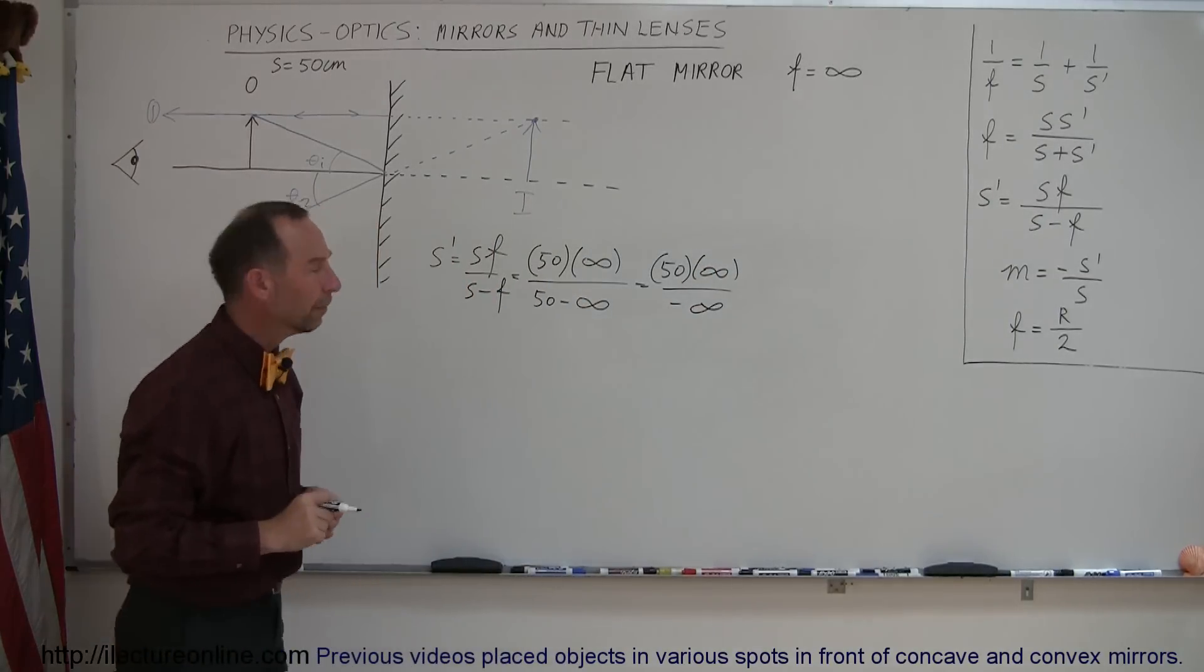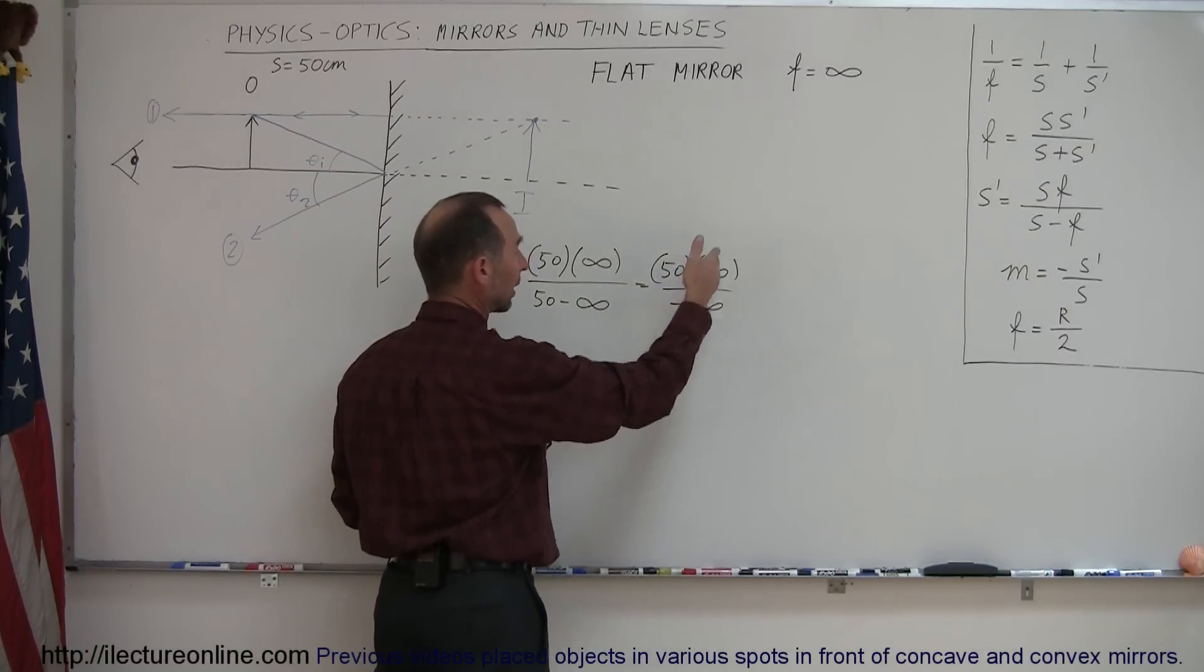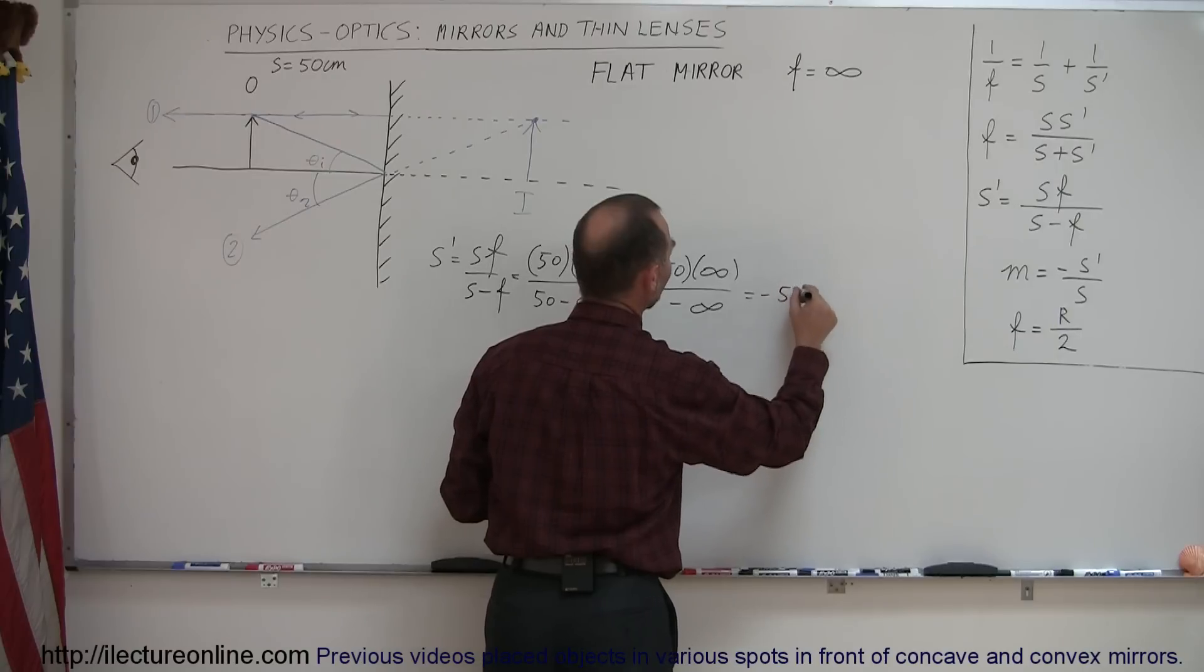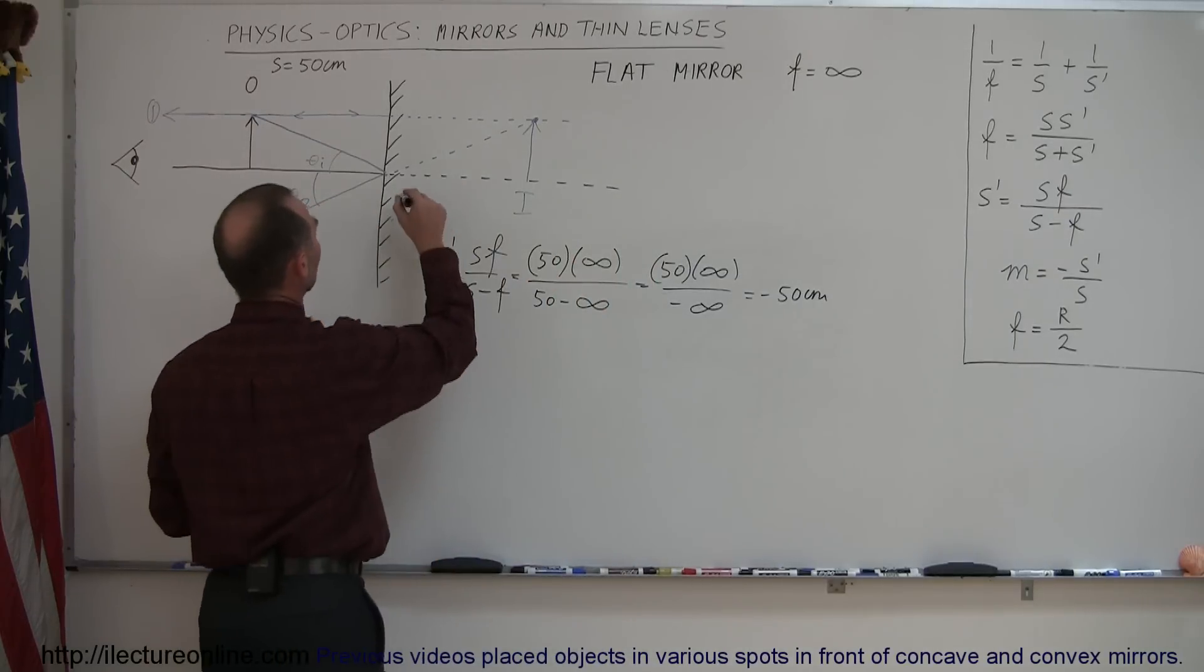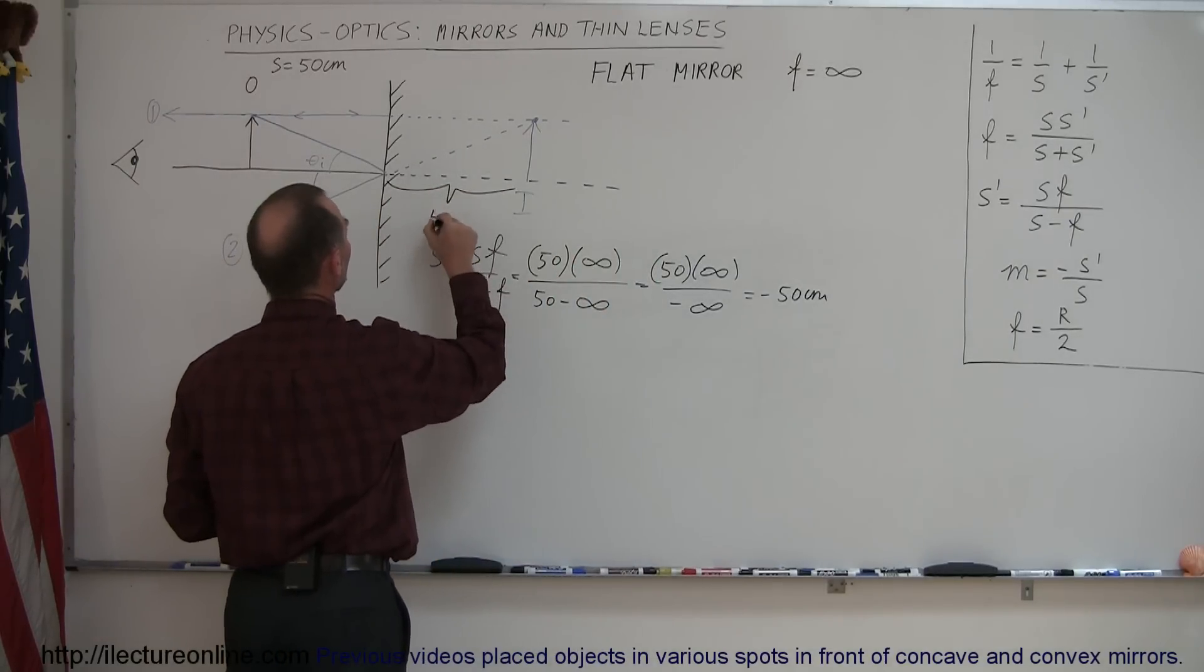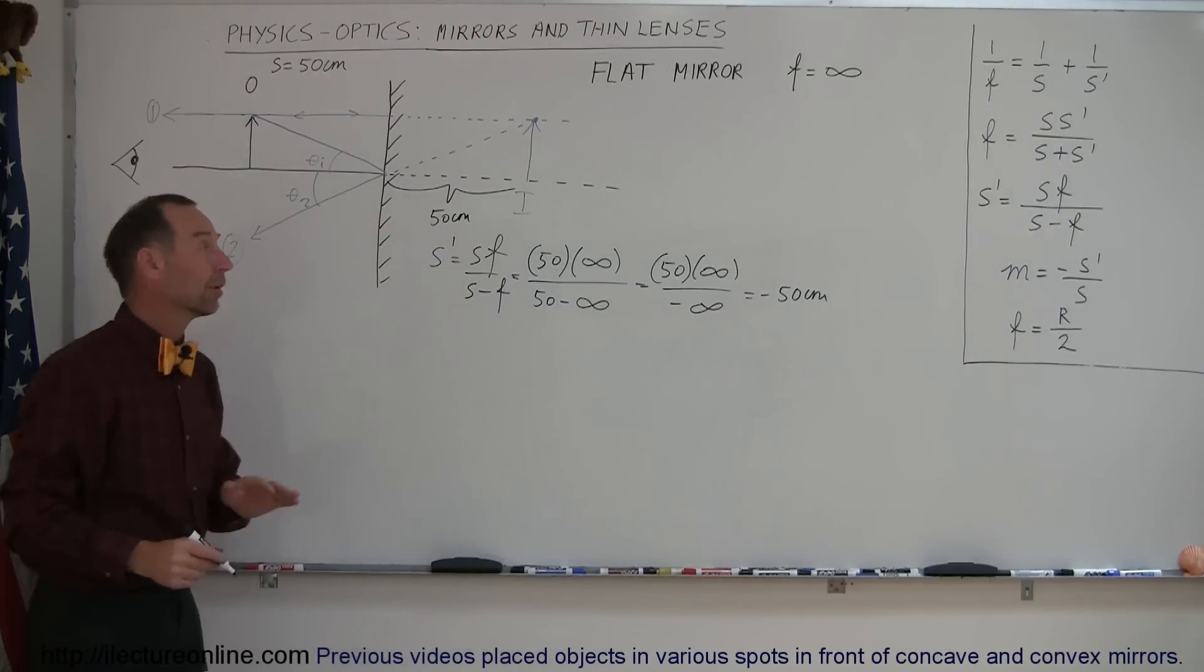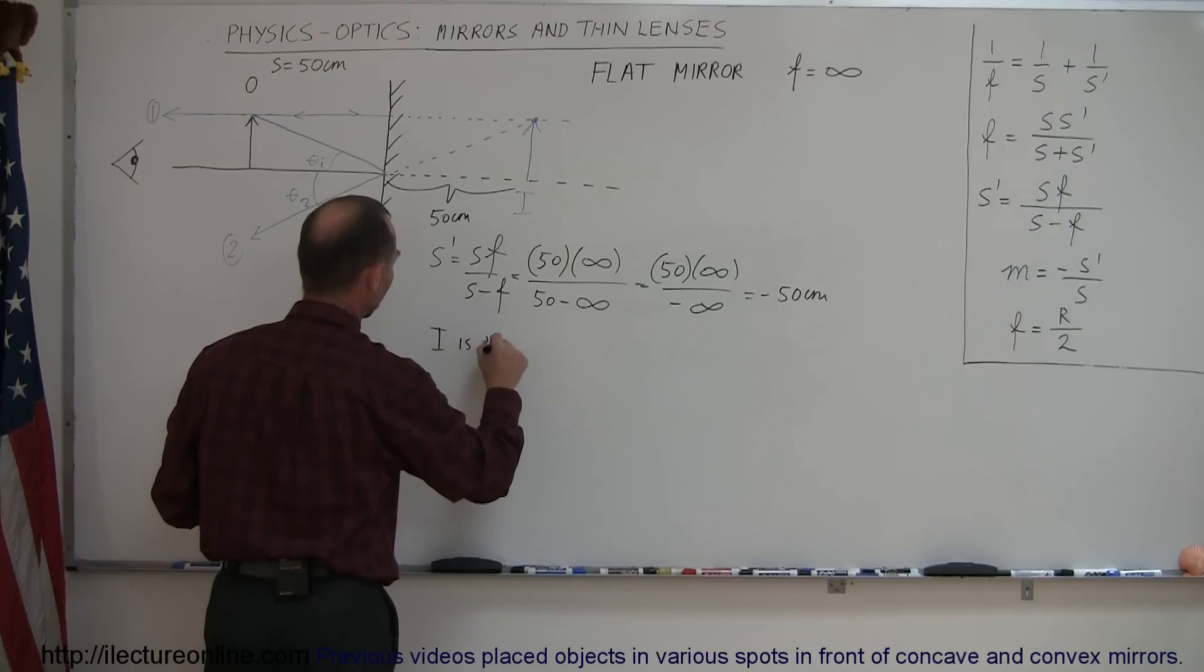Same thing, no difference at all. Now, we can see that we have an infinity in the numerator, we have on the denominator, we can cancel those out. We have a negative here, so this becomes minus 50 centimeters, which is the image distance. So, this distance right here is 50 centimeters. It is minus, which places it behind the mirror, which, of course, makes the image virtual. So, with flat mirrors, we have virtual images.